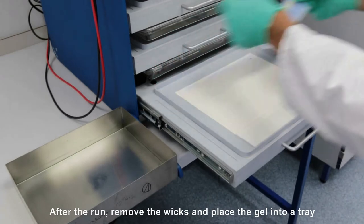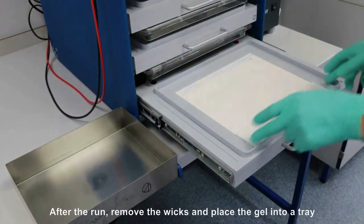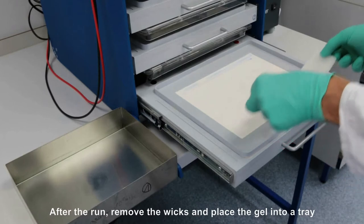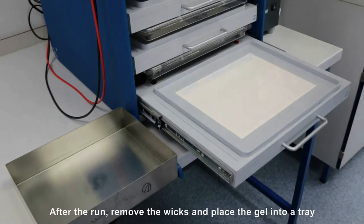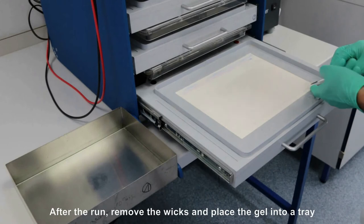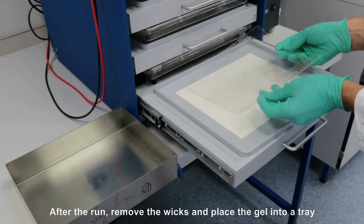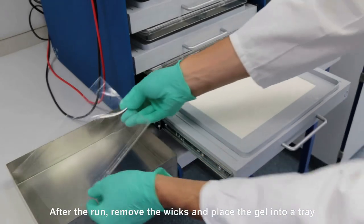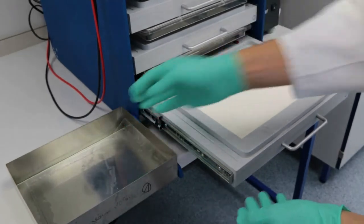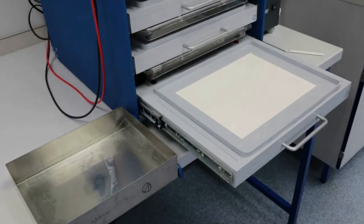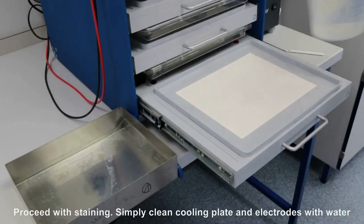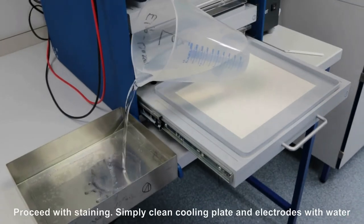When finished, remove the wicks and place the gel into a tray. Proceed with your staining protocol. Simply clean the cooling plate and electrodes with a water-soaked cloth.